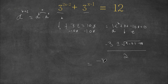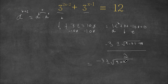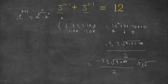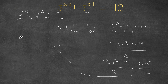This simplifies to negative 3 plus or minus the square root of 9 minus negative 4, which gives us the square root of 441, all over 2. The square root of 441 is 21, so we have negative 3 plus or minus 21, divided by 2.